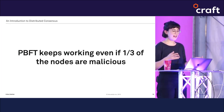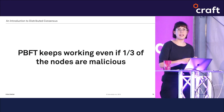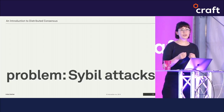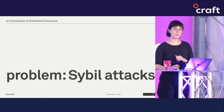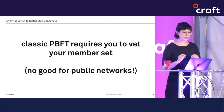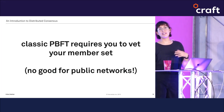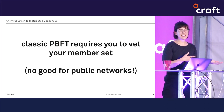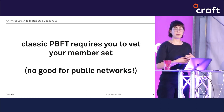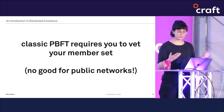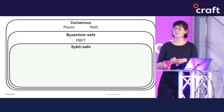Classically, PBFT prevents Sybil attacks by forcing nodes to negotiate their membership upfront — in other words, new nodes can't join. This might be okay for a lot of use cases, but an algorithm that doesn't let nodes join doesn't really work for a public blockchain network, which is supposed to be open for anyone to join at any time. So now we need another box in our universe: a Sybil-safe box.